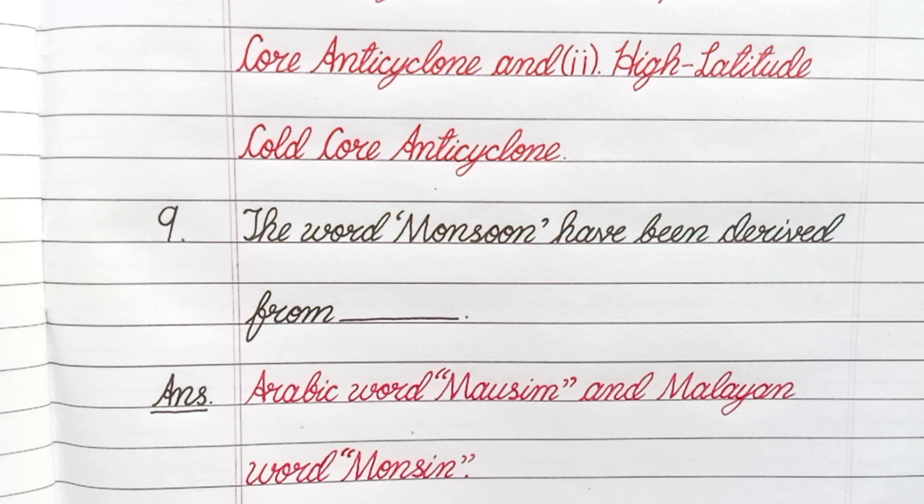Question number 9. The word monsoon has been derived from this? Answer. Arabic word mausim and Malayan word monsoon.